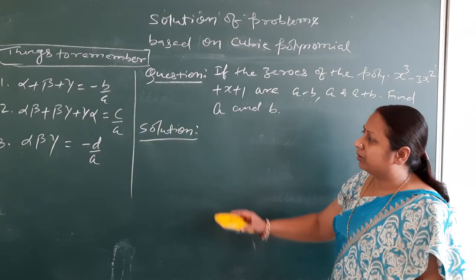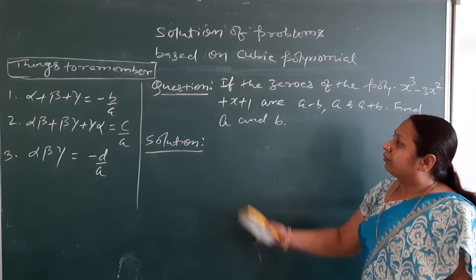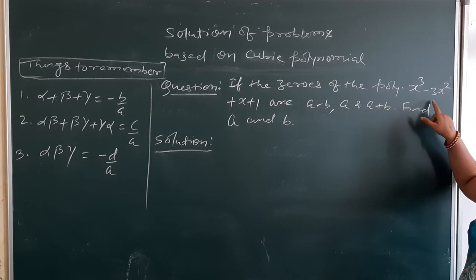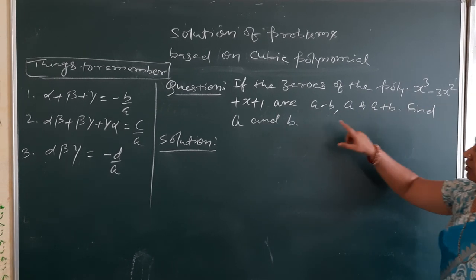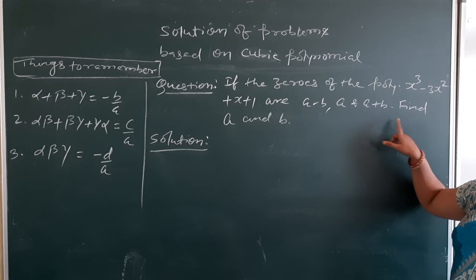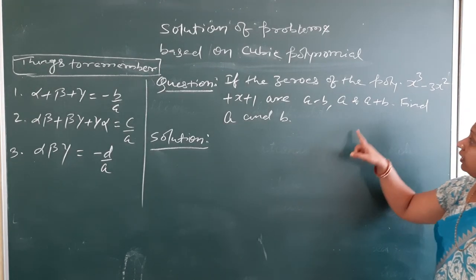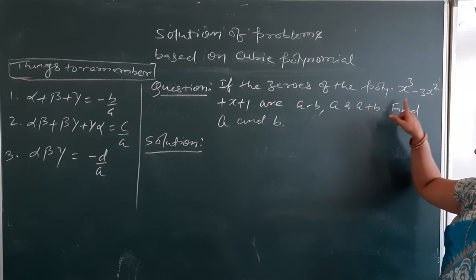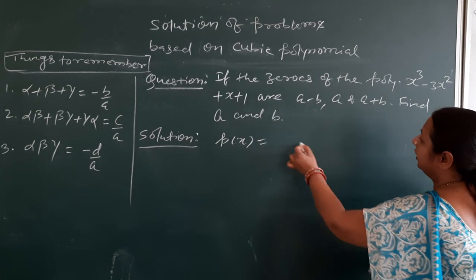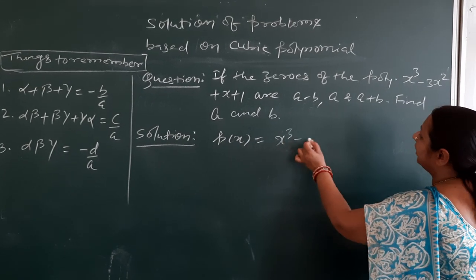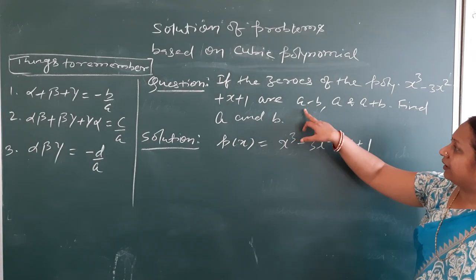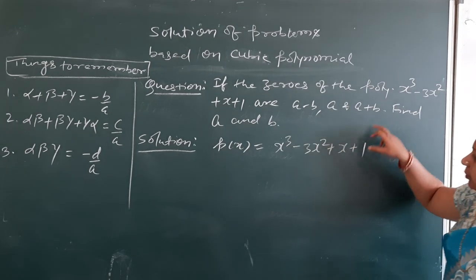Before solving the problem, you have to remember these formulas. Now the question is: if the zeros of the polynomial x³ minus 3x² plus x plus 1 are a minus b, a, and a plus b, find a and b. The polynomial is x³ minus 3x² plus x plus 1, and the zeros are a minus b, a, and a plus b.